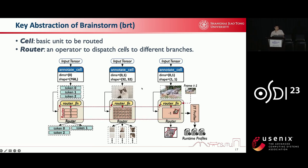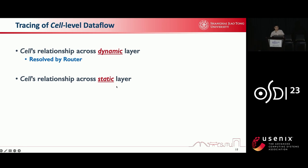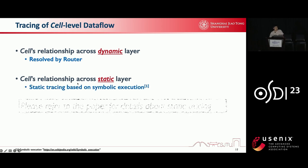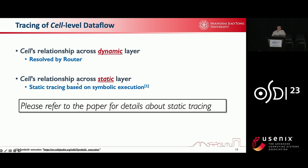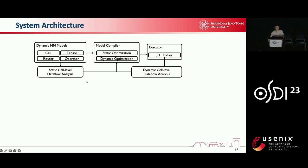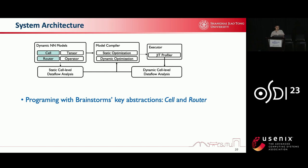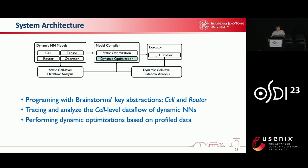Obviously, the output of the router function contains the cell relationships across the router. Brainstorm uses a JIT profiler to collect these runtime profiles for optimizations. However, Brainstorm also wants to propose some dynamic optimizations between adjacent routers, so it is necessary to extract the cell relationships across static layers. Brainstorm relies on existing solutions called symbolic execution for static tracing. Due to time limit, please refer to the paper for details about static tracing. Brainstorm can now optimize dynamic neural networks. Its system architecture is as shown in the figure. First, researchers need to program with cell and router. Brainstorm then traces and analyzes the cell-level data flow statically and dynamically. Finally, Brainstorm performs dynamic optimizations based on the profiled data.